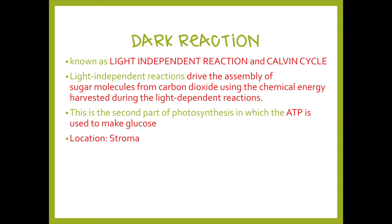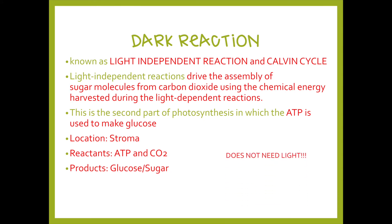The dark reaction takes place in the stroma of the chloroplast — so everything is still happening in the chloroplast, just in a different location, in that jelly-like substance. The reactants for this reaction are ATP from the light reaction and CO2. At the end it produces glucose, which is sugar. Again, this reaction does not need light.